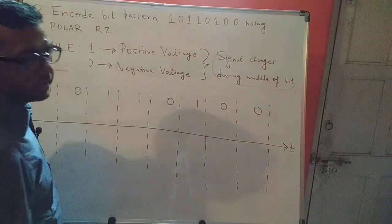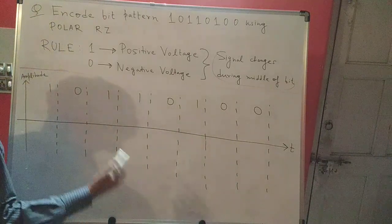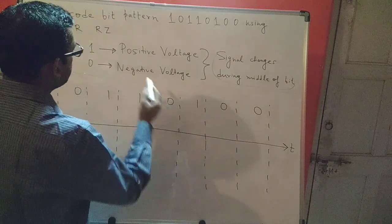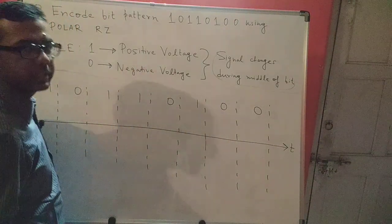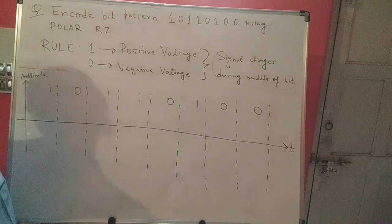We have seen this in unipolar NRZ if you recollect. You can find it in one of my earlier videos. You'll find that 1 representing a positive voltage, 0 representing a negative voltage.